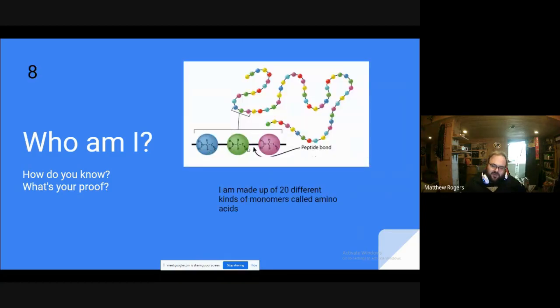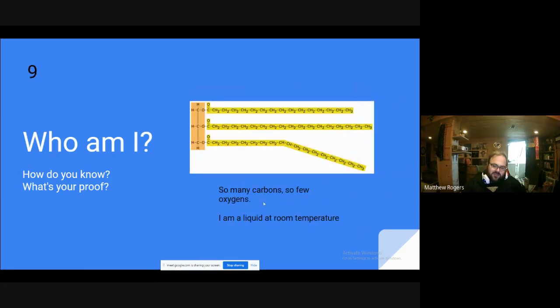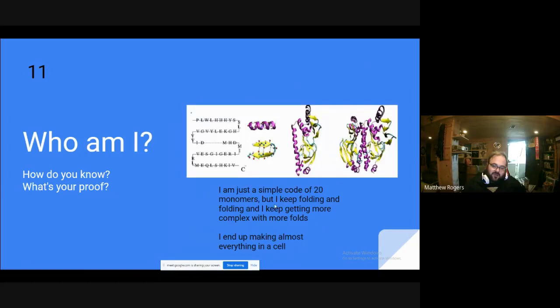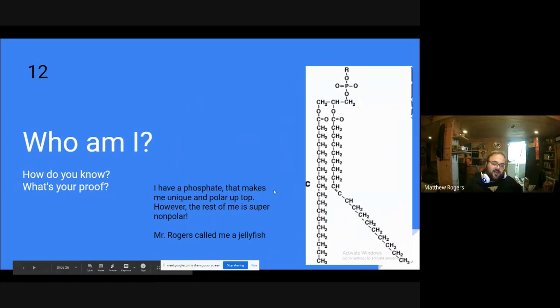Here I'm made up of 20 different kinds of monomers called amino acids. So that kind of helps you point towards protein. So many carbons, so few oxygens, I'm liquid at room temperature. This is unsaturated fat again, which is a lipid. I contain phosphate, I also again have three parts. This is a nucleic acid. I am just a simple coat of 20 monomers but I keep folding and folding. I keep being more complex with more folds. I end up making almost everything in a cell. This is protein. And the last but not least, I have a phosphate that makes me unique and polar up top. However, the rest of me is super nonpolar. Rogers calls me jellyfish. This is a phospholipid or a lipid in general.